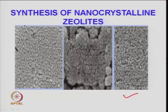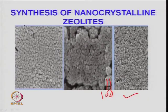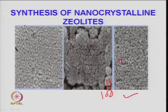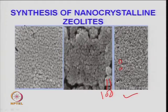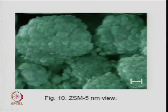Nano zeolites are shown at different magnification — 100 nanometers from here to here, and in another case magnified 1000 times showing larger particles. One can measure the particle size very easily. The geometry of the crystal can be clearly seen by looking at the morphology in scanning electron micrographs at different magnification — one can even count the number of particles in transmission electron micrographs.